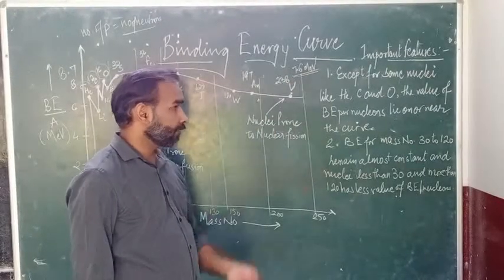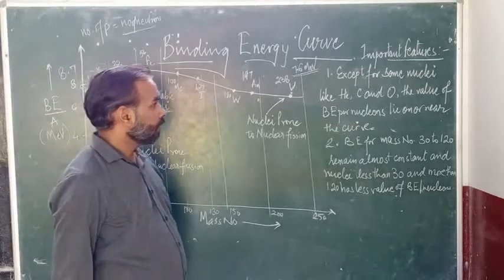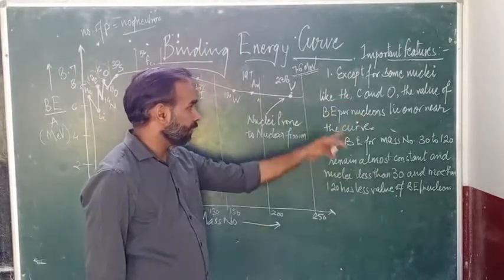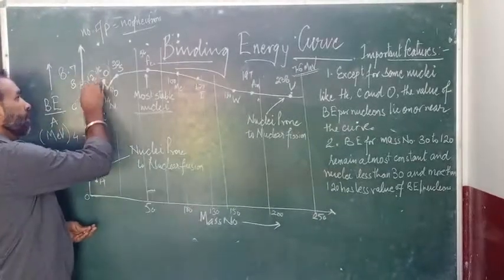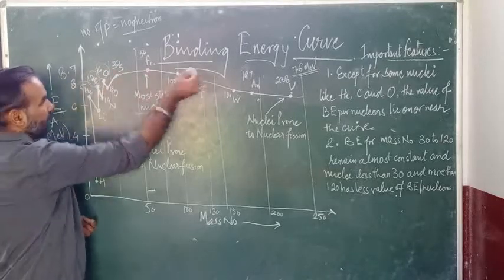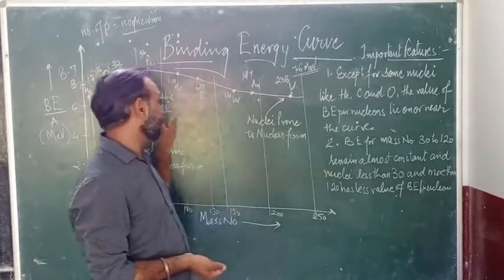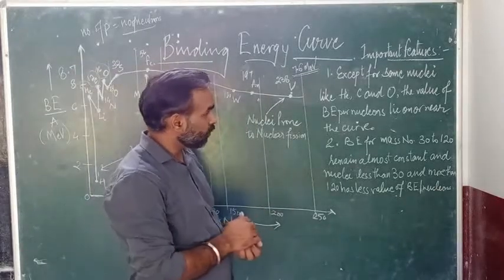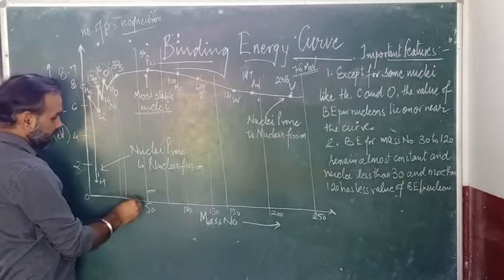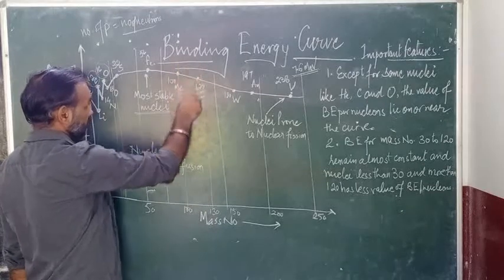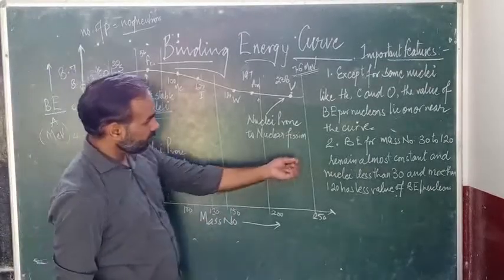There are some important features. Except for some nuclei like Helium, Carbon, and Oxygen, the value of binding energy per nucleon lies on or near the curve. The reason for their peaks I have already explained — when the number of protons equals neutrons, they sit at peaks. For mass numbers from 30 to around 120, the binding energy per nucleon remains almost constant.